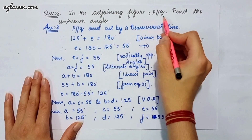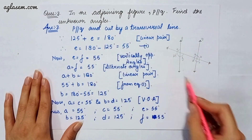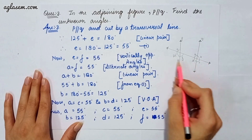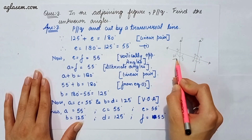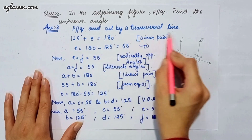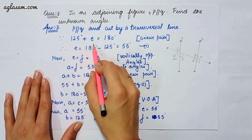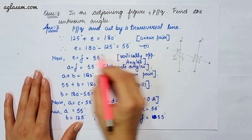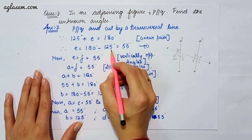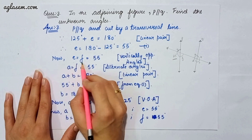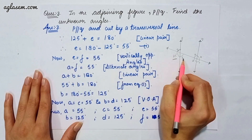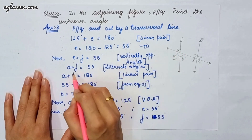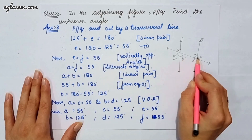Question 3 says: in the adjoining figure, P is parallel to Q. Find the unknown angles. We have to find angles A, B, C, D, E, and F. The given angle is 125 degrees. Since P is parallel to Q and cut by a transversal, 125 plus E equals 180 by linear pair, so E equals 55 degrees. E equals F as they are vertically opposite angles, so F is also 55 degrees. A equals F by alternate angles, so A is 55 degrees.